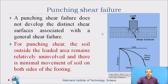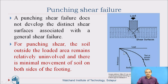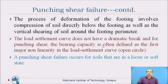In punching shear failure, the whole structure subsides below — the punching occurs. Punching shear failure does not develop the distinct shear surfaces associated with general shear failure. The curve will also not give a distinct point for ultimate load; you will have to find the point where the curve deviates appreciably to locate the ultimate stress or bearing capacity of soil.